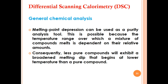General chemical analysis can also be done by DSC. Melting point depression can be used as a purity analysis tool, because the temperature range over which a mixture of compounds melts depends on their relative amounts. With impurities, the melting point of any chemical or drug compound decreases. Consequently, a less pure compound will exhibit a broadened melting endotherm beginning at a lower temperature than a pure compound. By comparing with a reference pure sample, purity can be determined on the basis of melting point. DSC is an important technique for determination of melting point to characterize any compound under investigation.